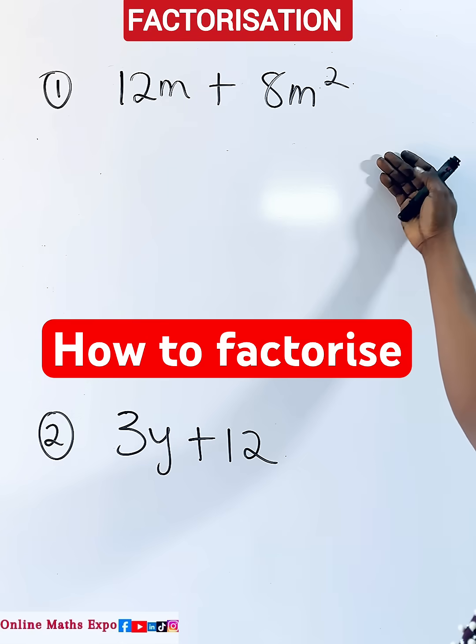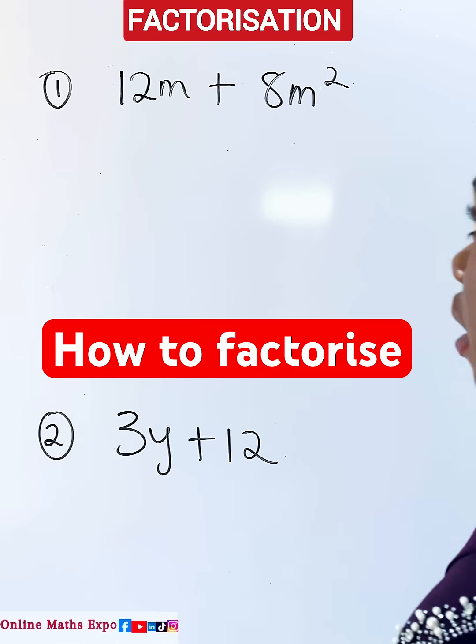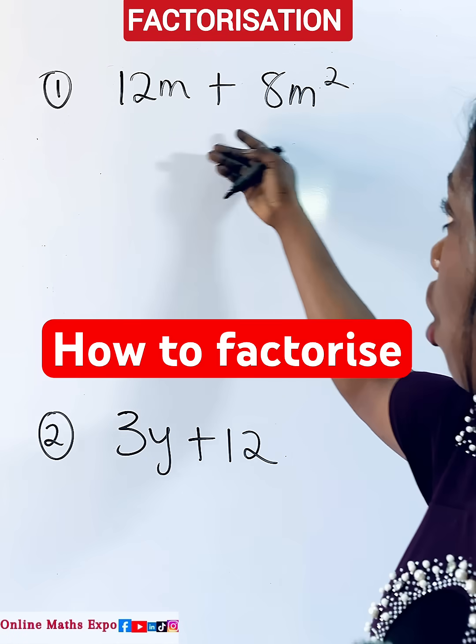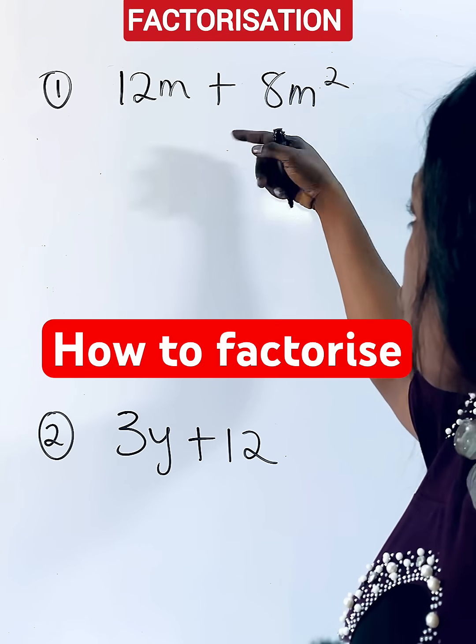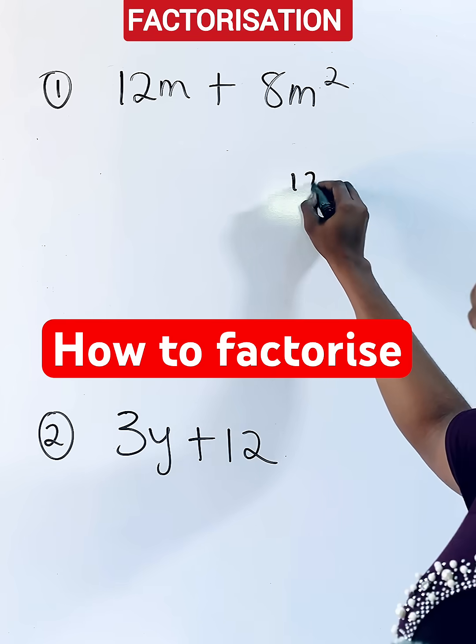Let me teach you how to factorize expressions like this. So what you do here is you're going to get the highest common factor. What is the highest number that can divide these two? You observe that for 12m and 8m squared...